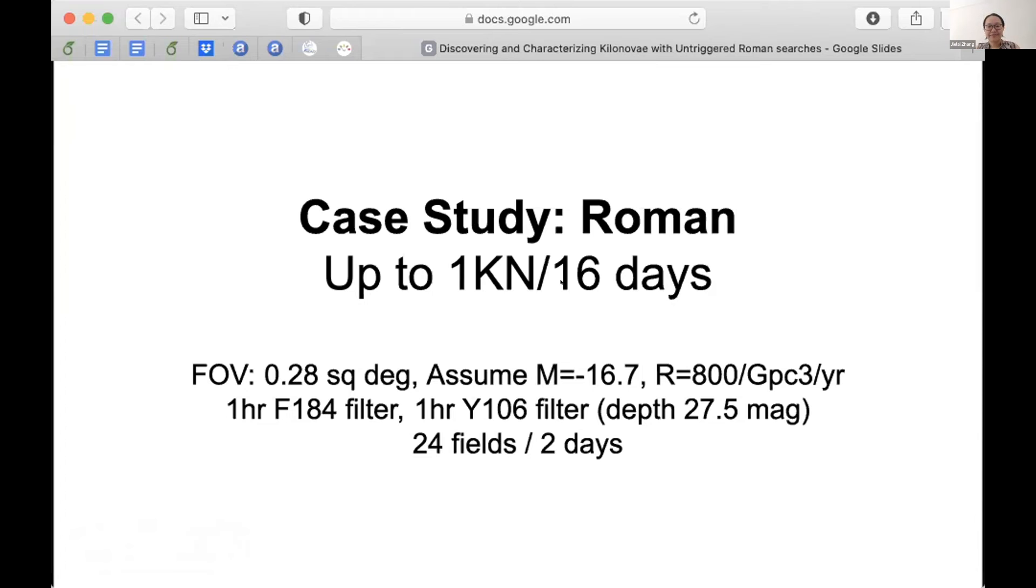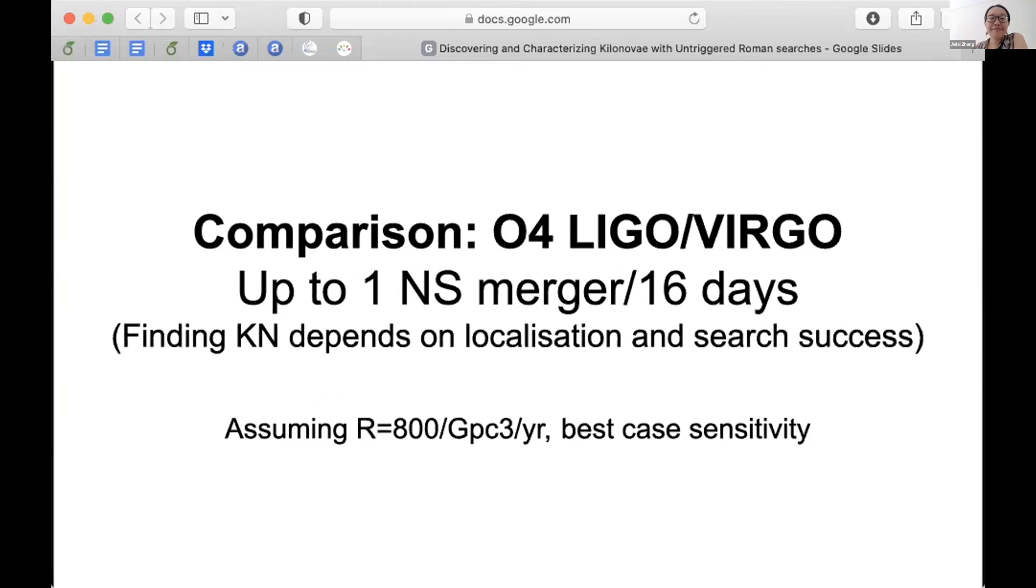I put in, for example, if we use these two filters, which can get us to this depth 27.5 in one hour each, and we do a two day cadence study, then we can do on the order of 20 something fields every two days, then we can discover up to one kilonova every 16 days, which is very exciting. And so perhaps for some of the already planned surveys, such as the high galactic latitude survey with Roman, we can do some, we can change the cadence from the suggested five days to a shorter cadence for a subset of the fields, which would make this possible.